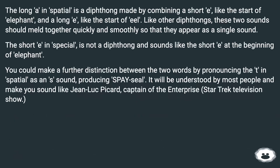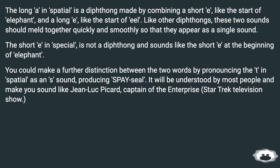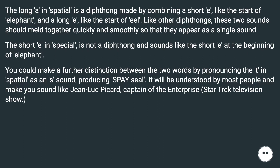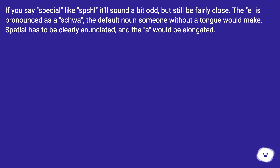The long A in 'spatial' is a diphthong made by combining a short E (like the start of 'elephant') and a long E (like the start of 'eel'). Like other diphthongs, these two sounds meld together quickly and smoothly so they appear as a single sound. The short E in 'special' is not a diphthong and sounds like the short E at the beginning of 'elephant'. You could make a further distinction by pronouncing the T in 'spatial' as an /ʃ/ sound, producing 'space-eel' — it will be understood by most people and make you sound like Jean-Luc Picard, captain of the Enterprise. If you say 'special' like /spʃl/ it'll sound a bit odd but still be fairly close; the E is pronounced as a schwa. Spatial has to be clearly enunciated and the E would be elongated.